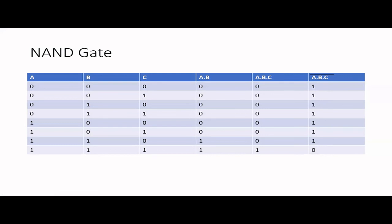So up to now, we have learned three basic gates and two combinational gates. These are the basics you need to know, because the next part will be more advanced — designing complex logic gate circuits and writing Boolean expressions for them. If you haven't subscribed yet, please do subscribe and leave your comments. Thank you very much, we'll meet again.